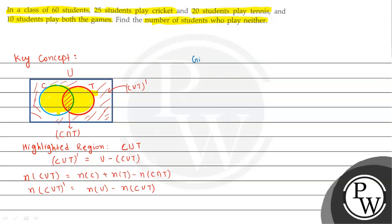We will use these concepts to solve the question. The total number of students given is 60, so the universal set has 60 students. The number of students who play cricket is 25.